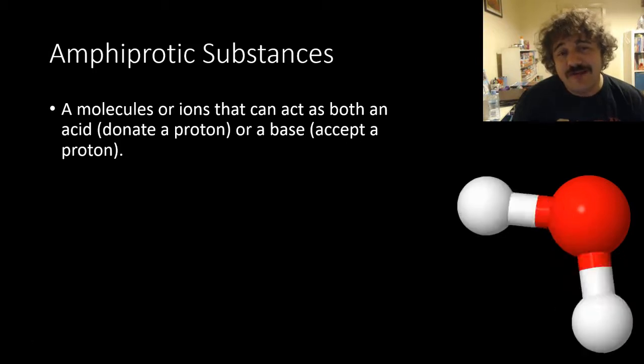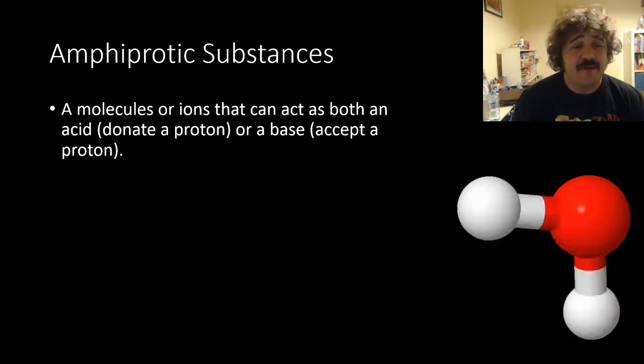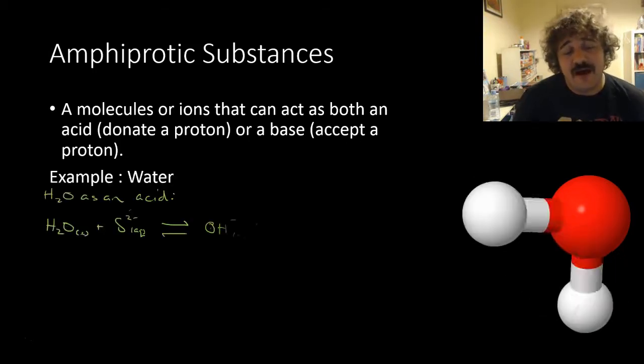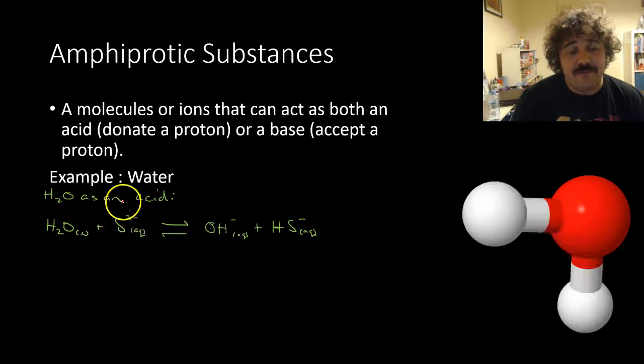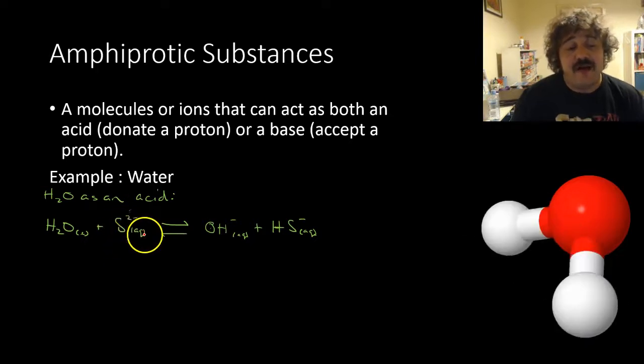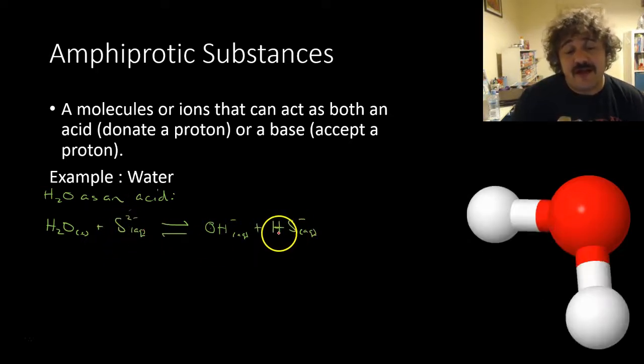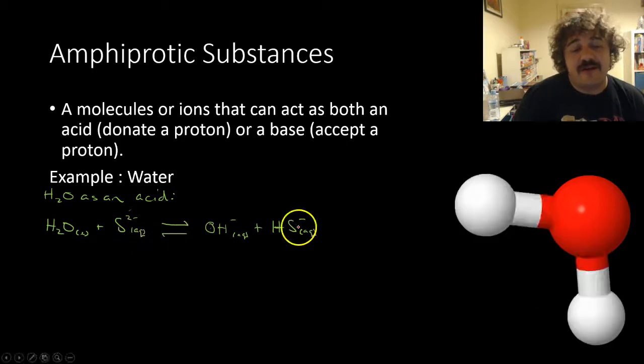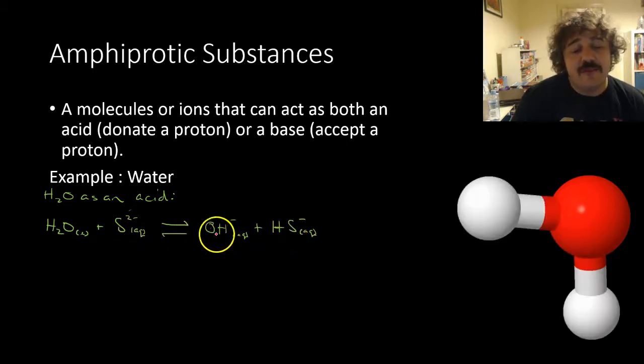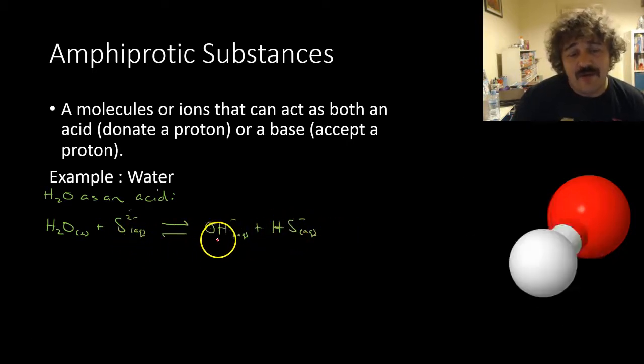So it can either act as an acid or a base, and the most common example of this is water. So let's have a look. Basically, water can act as an acid. Here it is with a sulfide ion, and when you do this, you get a hydrogen sulfide ion. So water plus sulfide ion gives you hydrogen sulfide plus an OH-.